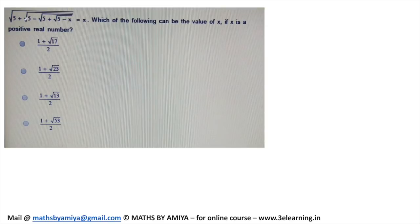Now this one is nothing but root 5 plus root 5 minus root 5 plus root 5 minus x, and x is what? x is nothing but the given expression. So what we are doing is we are writing this expression again and again. So our term is nothing but root 5 plus root 5 minus root 5 plus root 5 minus again, and so on.